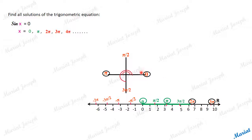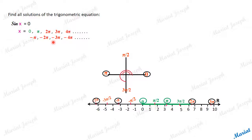Not only positive angles — going in the negative direction, minus pi is also a solution because it is co-terminal with positive pi, and sin(−pi) = 0. Similarly, minus 2pi, minus 3pi, minus 4pi, etc. are also solutions. There are infinitely many solutions, and all of them are integer multiples of pi, so we write the general solution as x = nπ, where n is any integer.